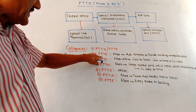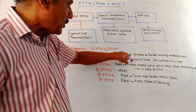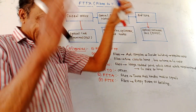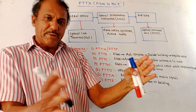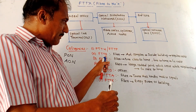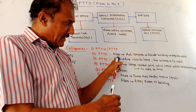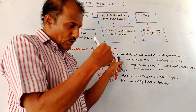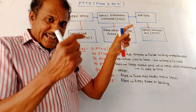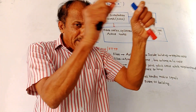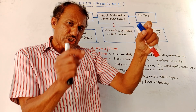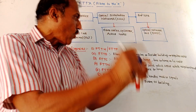Next is FTTB — fiber to the building or apartment complex. In an apartment complex there may be different buildings, so FTTB indicates the fiber connection is given to the apartment complex. Inside the building, copper cabling is used to give the connection to different homes.